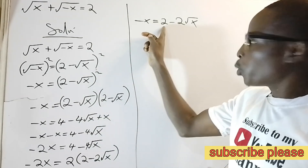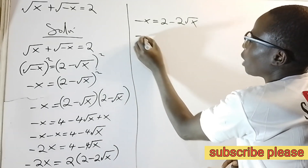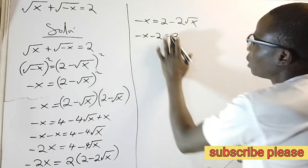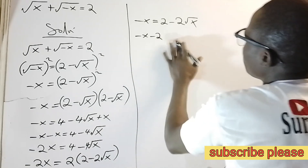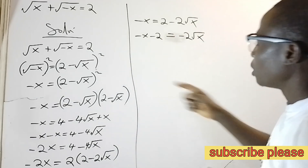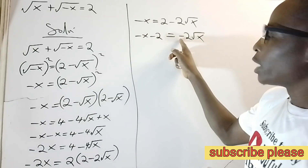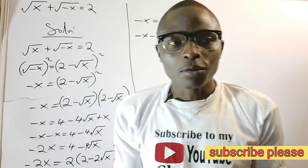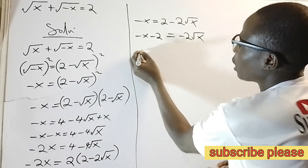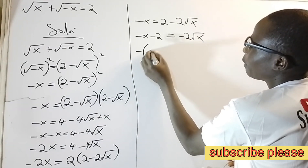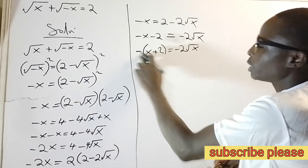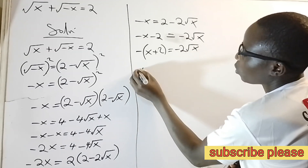I transpose the positive 2 to the left hand side so I have negative x minus 2 equals negative 2 root x. I don't want to deal with negative figures, so I factor out negative one: negative(x plus 2) equals negative 2 root x. The negatives cancel, so x plus 2 equals 2 root x.